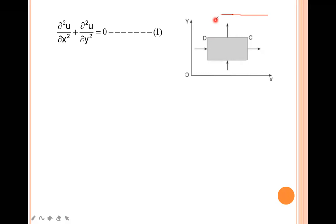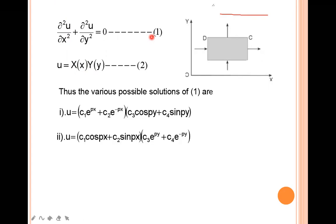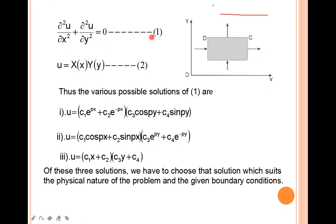We are solving this by using the separation of variables. For this we consider u equal to X(x) multiplied by Y(y). We differentiate u with respect to x and y partially, twice each, and substitute into equation one. We will get three solutions, and based on the given boundary conditions and the physical nature of the problem, we use any one of the solutions.